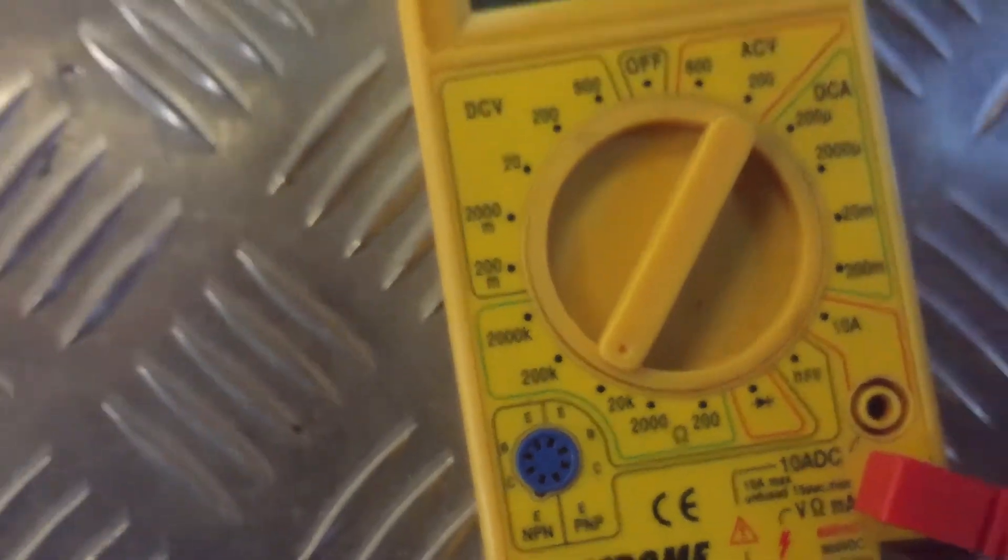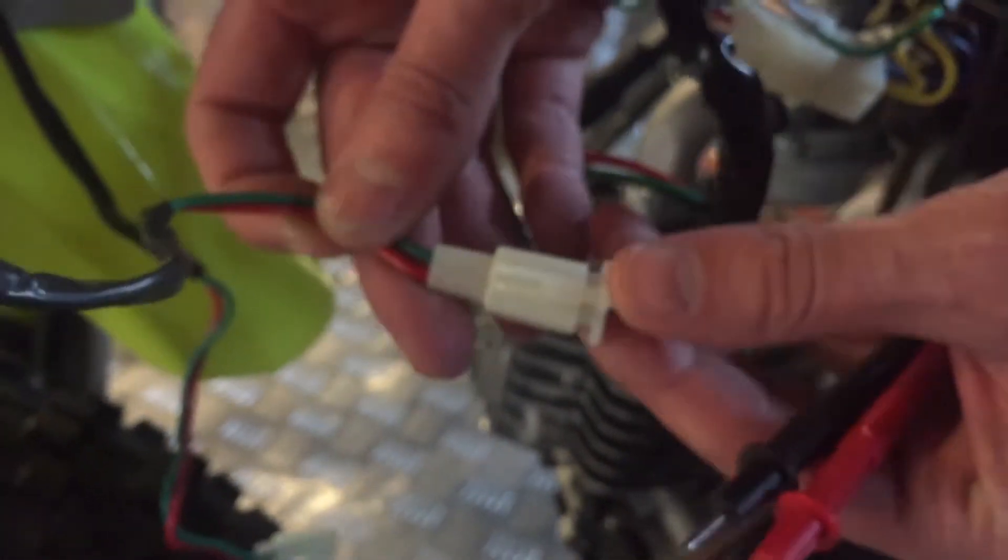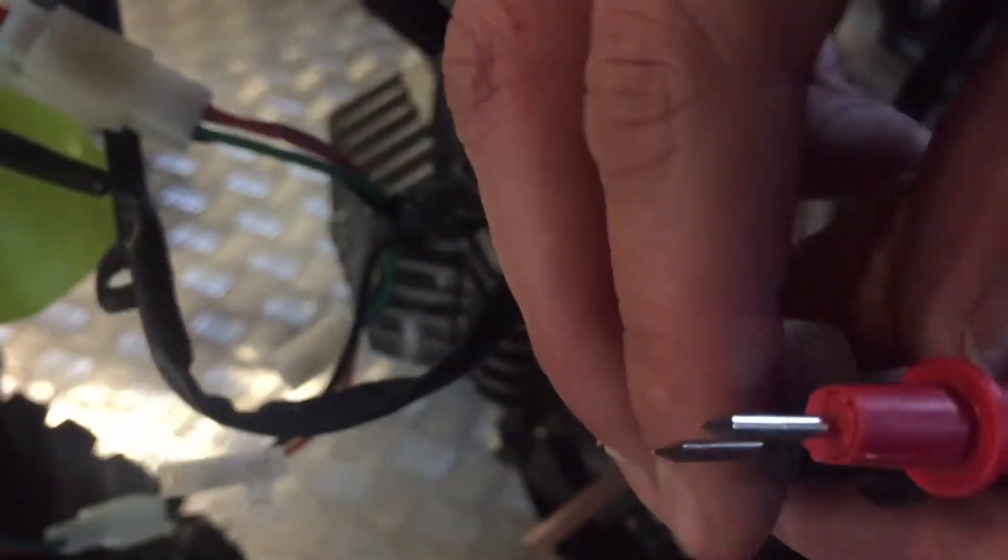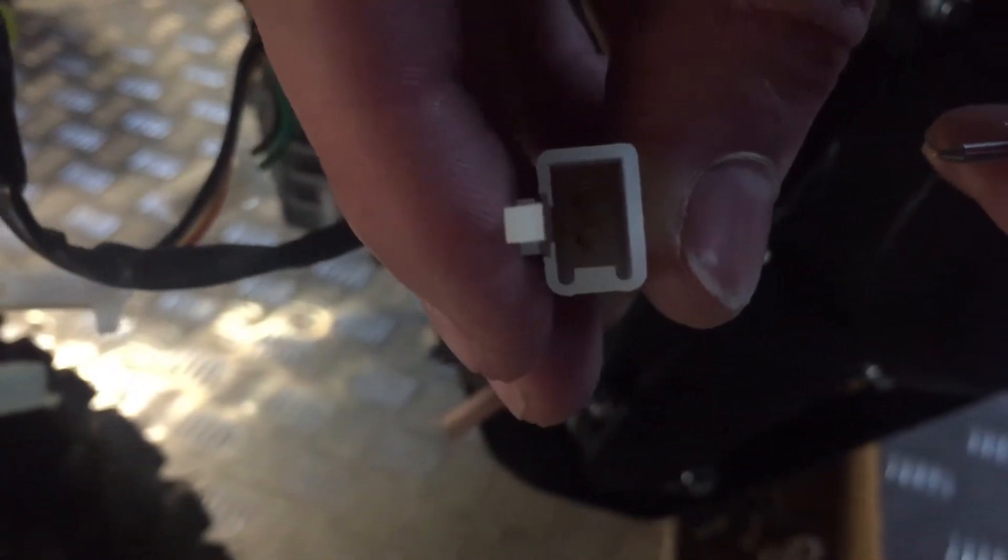What we're going to do is disconnect the starter switch which you can see here. We're going to follow the wiring down which is this one here. We've disconnected the starter switch and we're going to look down at the end and see those two pins.